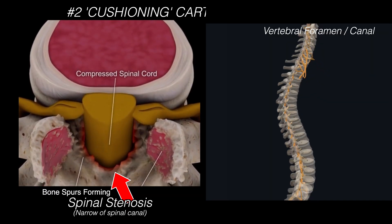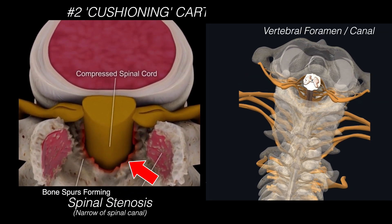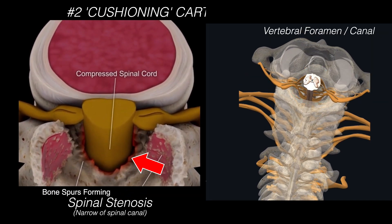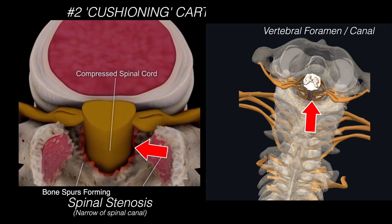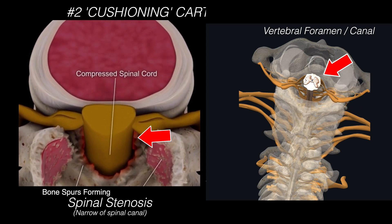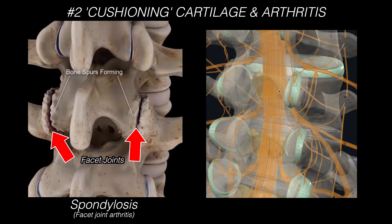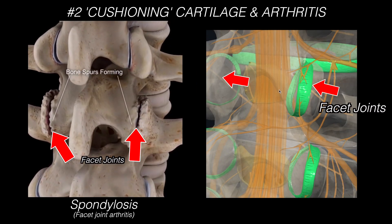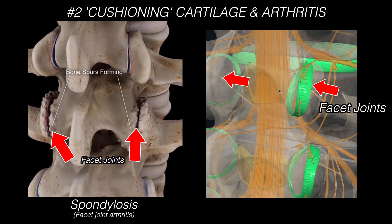Arthritis of the vertebral cartilage that can cause narrowing in the spinal canal is called spinal stenosis. Arthritis of the facet joints is called spondylosis.